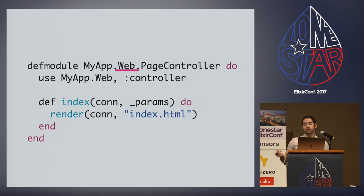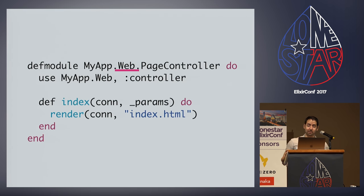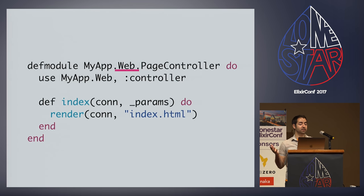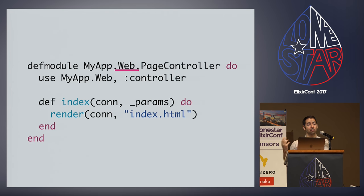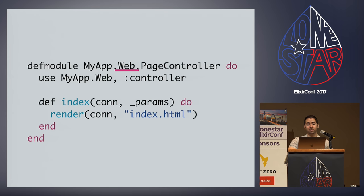We're also introducing a web namespace. So a little bit more typing, but we want to send the message that you naturally namespace your modules based on your folder hierarchy anyway. When you see this, it's reinforcing that this module of my application is the web layer — this is the web interface to my greater domain. With aliasing, this is pretty much a non-issue.